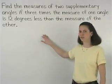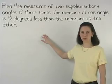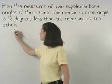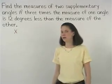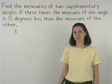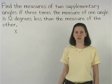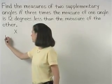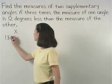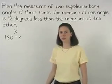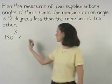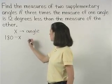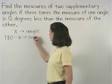In this problem, since we don't know the measures of our supplementary angles, let's call the first angle x. And remember from the previous section that if an angle measures x degrees, then the measure of its supplement is 180 minus x degrees. So let's call x an angle and 180 minus x its supplement.